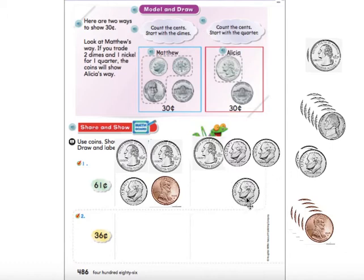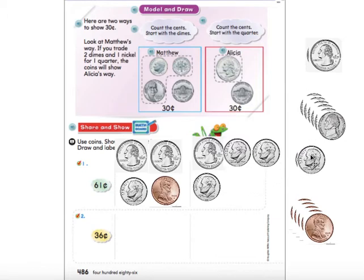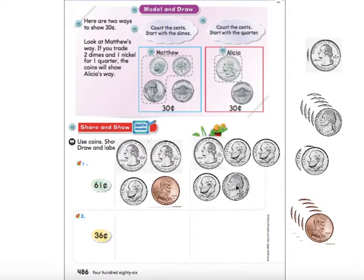45, 55. Now I can't use another dime because that's going to be 65. So if I'm at 55 and I want to get to 60, which coin would I use? A nickel. 25, 35, 45, 55, 60. One penny makes 61.